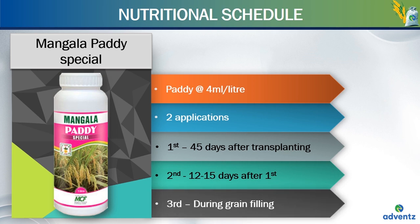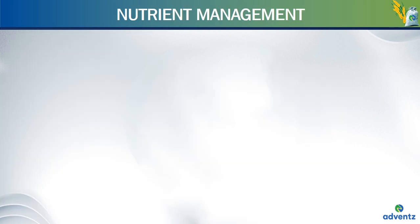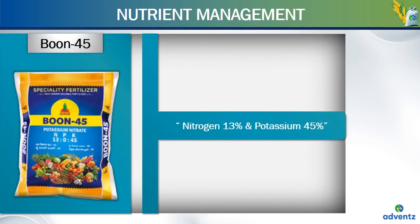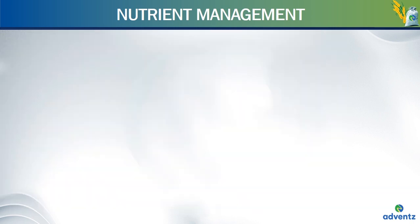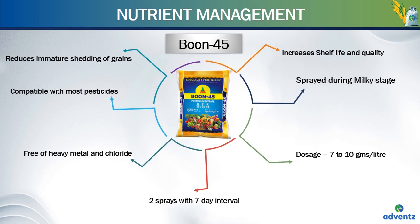Boone 45 is a specialty fertilizer, an NK grade that contains 13% nitrogen and 45% potassium, also called potassium nitrate. It is useful for development of grains, increases shelf life and quality of produce. It is sprayed during the milky stage or dough stage to improve grain size and protein content. Its dosage is 7 to 10 g per litre of water and 2 sprays at 7-day intervals are ideal. Boone 45 is free of heavy metals and chlorides, compatible with most pesticides and reduces immature shedding of grains.